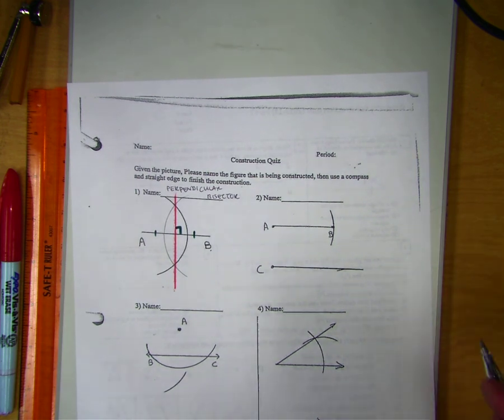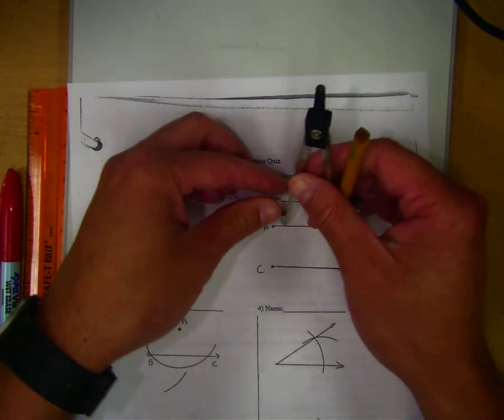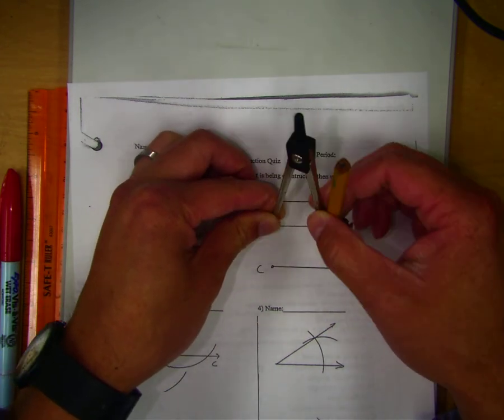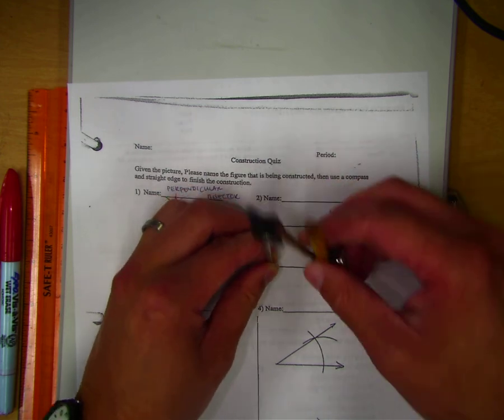The second one, notice how they started here, right now here to B. They drew an arc there, going down to C and doing the same thing.